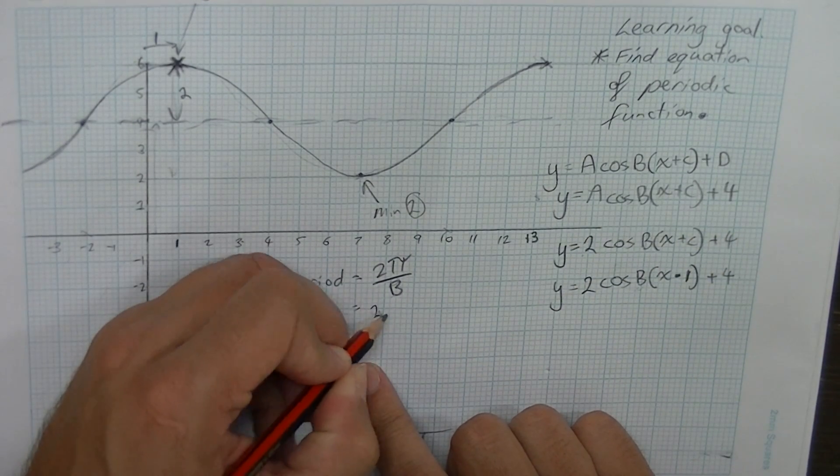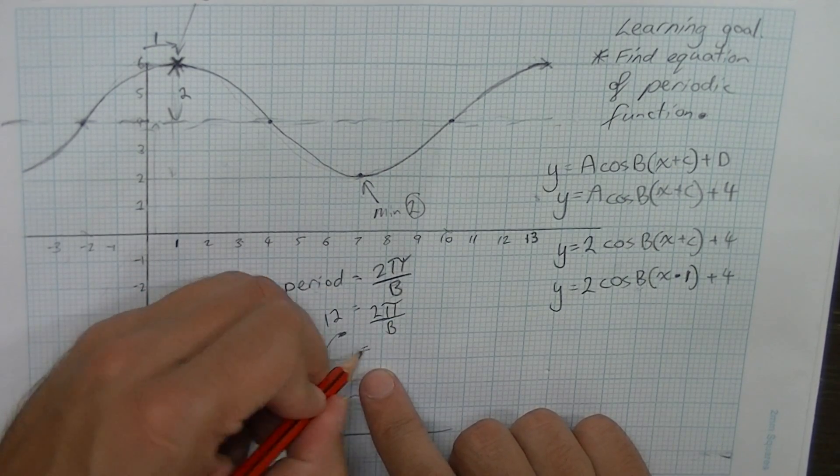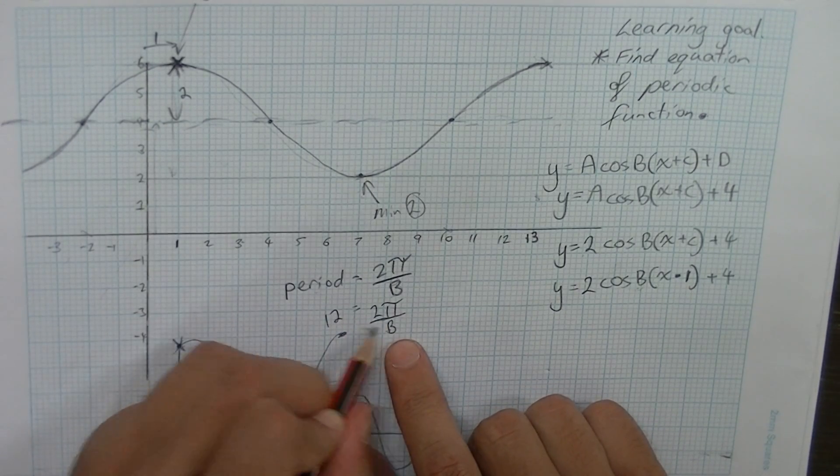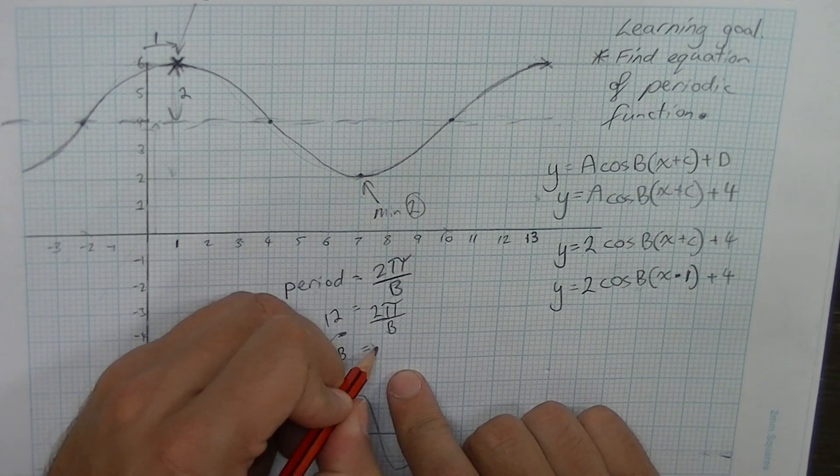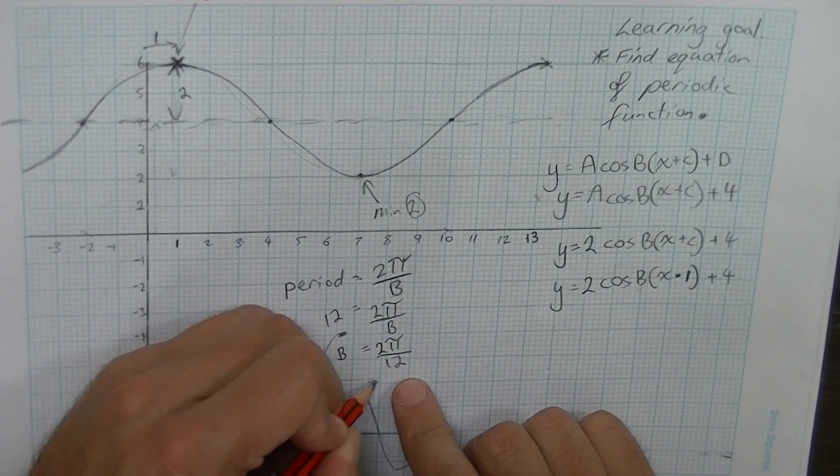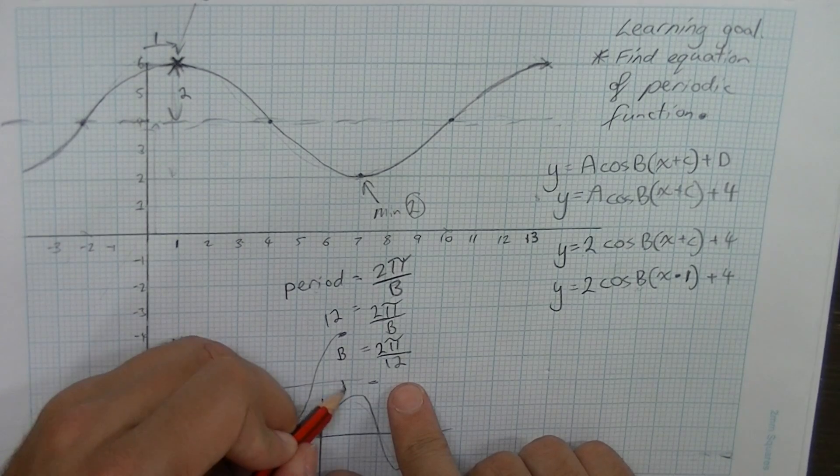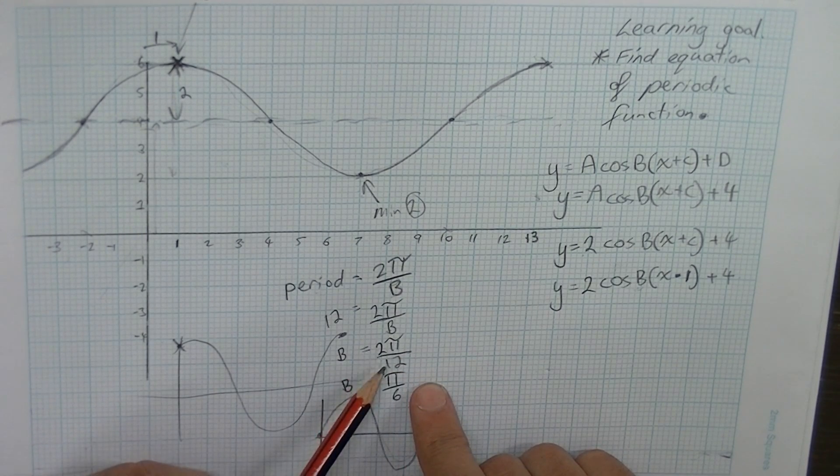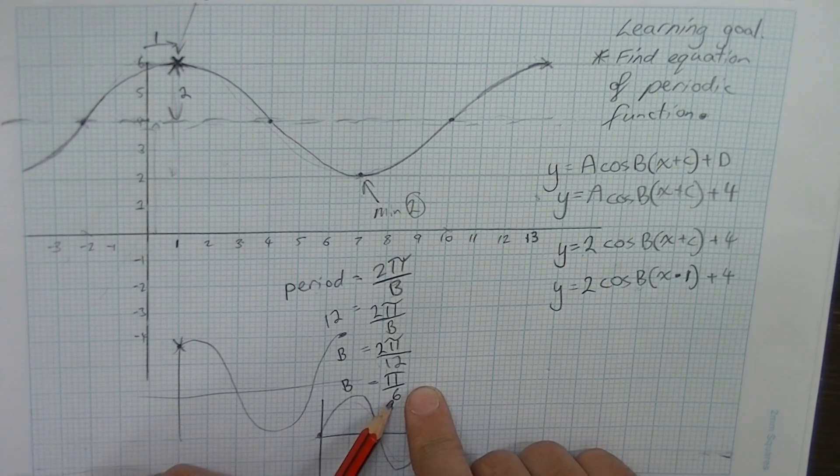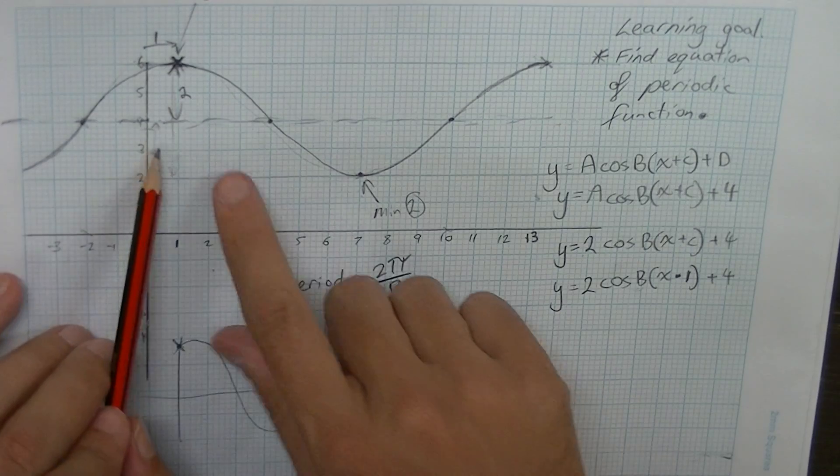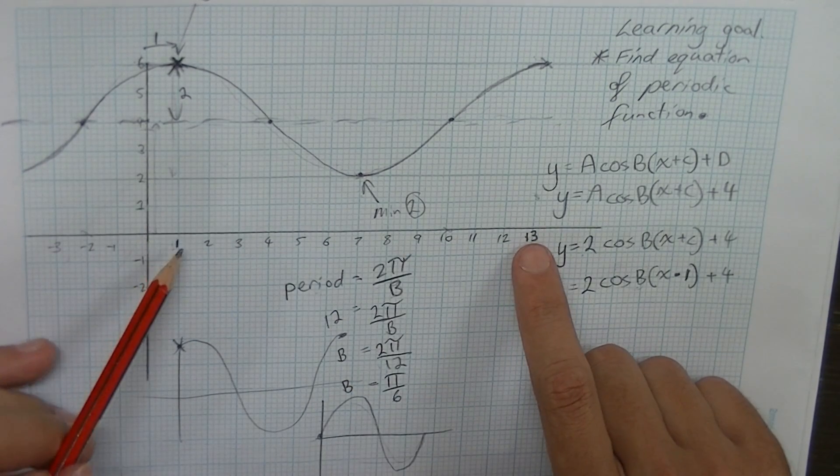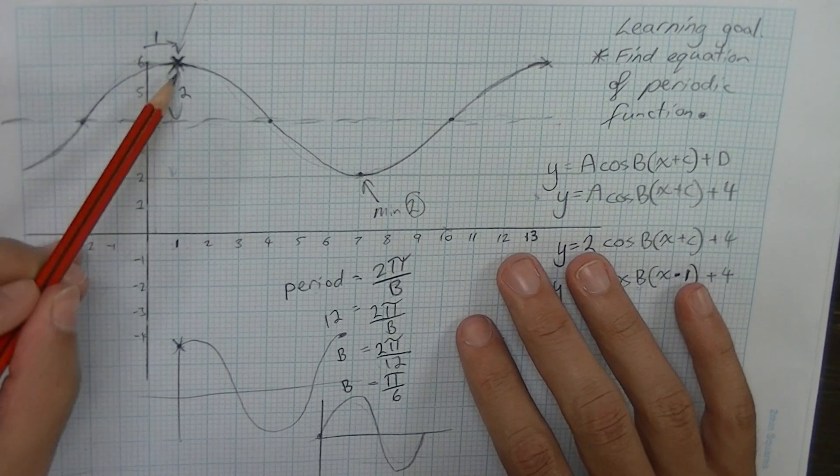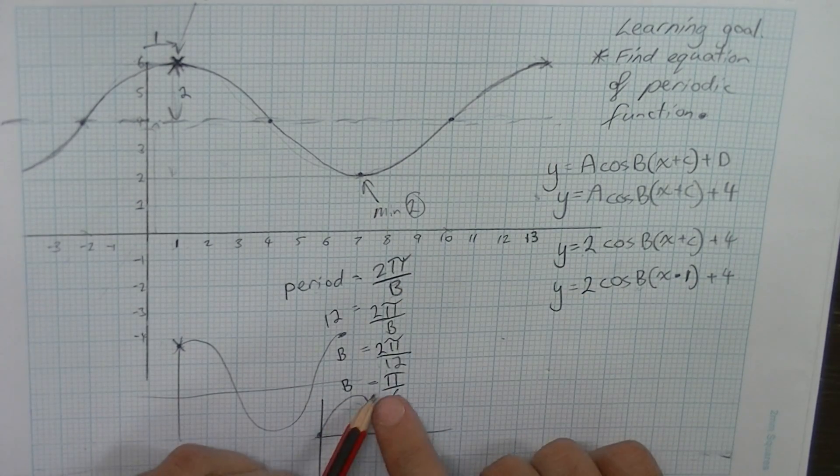So 12 equals 2 pi on b. And then it's just a matter of solving that. So we can see that if I move my b up to here, and I move my 12 down to there. Now if I simplify that, I'll get b equals pi on 6. 2 pi on 12, 2 divided by 12 is 1 on 6. So it's going to be pi on 6. This happens very, very regularly with this kind of stuff. Things often have a period of 12 or a period of 24. Things like the tides or anything that happens on a daily basis might have something that looks like this.